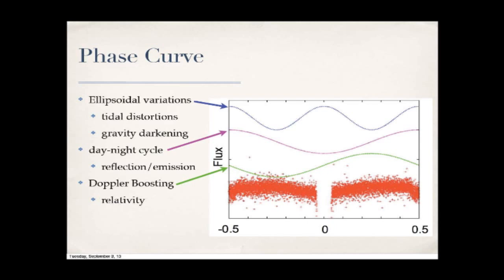Regarding the relative strengths of these effects: it depends on planet mass and separation. Tidal forces scale as 1/r³ — diminishing quickly with distance. Doppler boosting scales with mass, exactly as in radial velocity. The day-night cycle scales as 1/r². For a Jupiter-sized planet, a day-night cycle might be 50–100 parts per million, ellipsoidal variations around 5 ppm, and Doppler boosting 1–10 ppm — very tiny numbers.